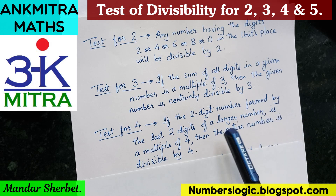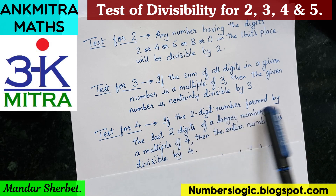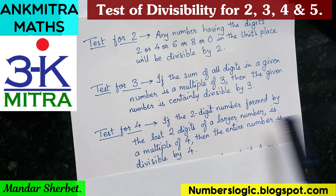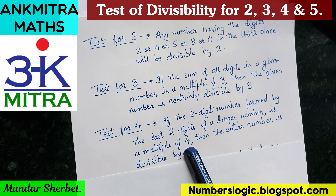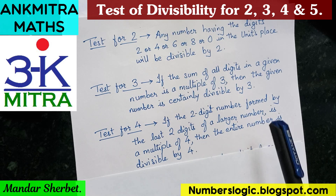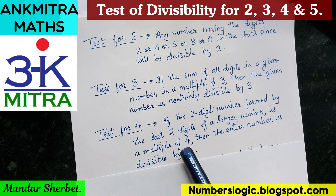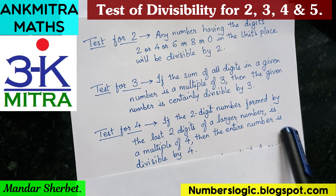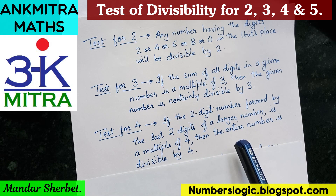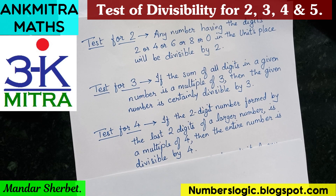If the two-digit number formed by the last two digits of a larger number is a multiple of 4, then the entire number will be divisible by 4. Now let's move to the test for divisibility of 5.